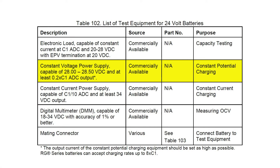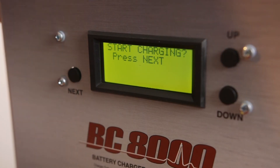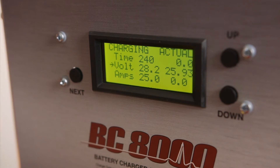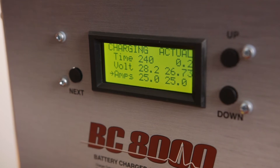Per Table 102 of the CMM, the current needs to be at least 20% of the C1 rate. For this battery, the C1 rate is 42 amps, so the charge current needs to be at least 20% of 42, or 8.4 amps. However, it is best to use the maximum output of 25 amps to cut down on the charging time. With these settings in place, we can now start the charge cycle. As you can see, the battery is charging at a voltage level above 24 volts and a current of 25 amps. Once the battery voltage reaches 28.2 volts, the voltage will be held constant at this value and the current will taper down to a very low level. We'll come back in 4 hours when the charging cycle is complete.